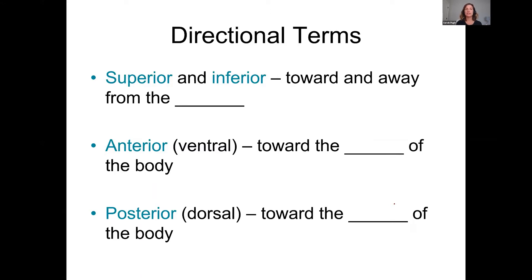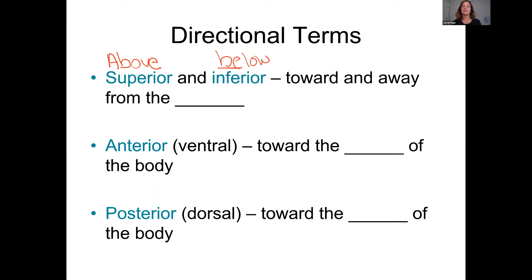The first directional terms are superior and inferior. Superior means above — think of a superior at work, someone above you. Inferior just means below. Another way to think about it: superior and inferior refer to toward and away from the head. For example, the heart is superior to the bladder — it's above it. Or you could say the stomach is inferior to the heart — it sits below the heart.